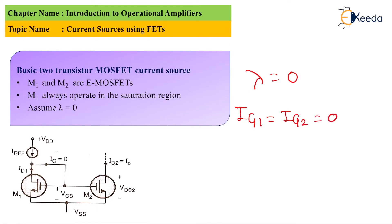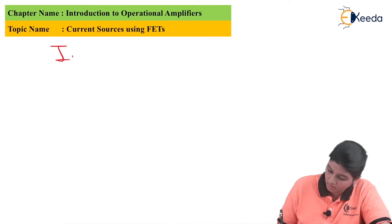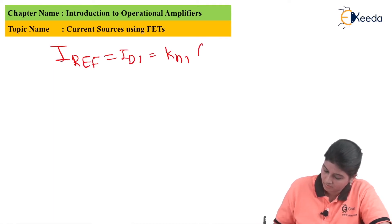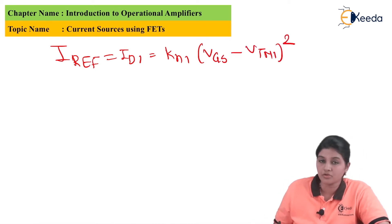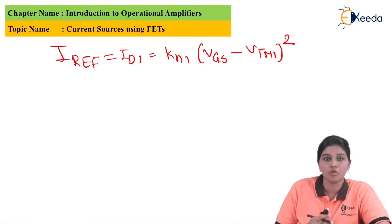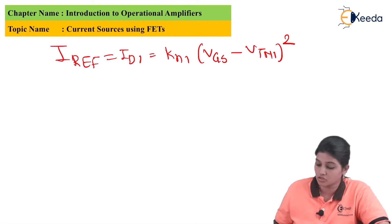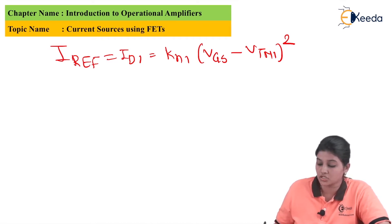The reference current is the drain current of MOSFET M1. Therefore, I_reference = ID1 = KN1 × (VGS − VTN1)².